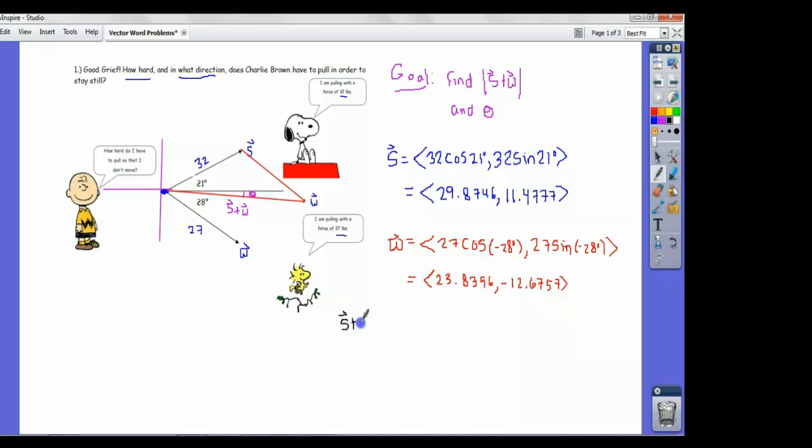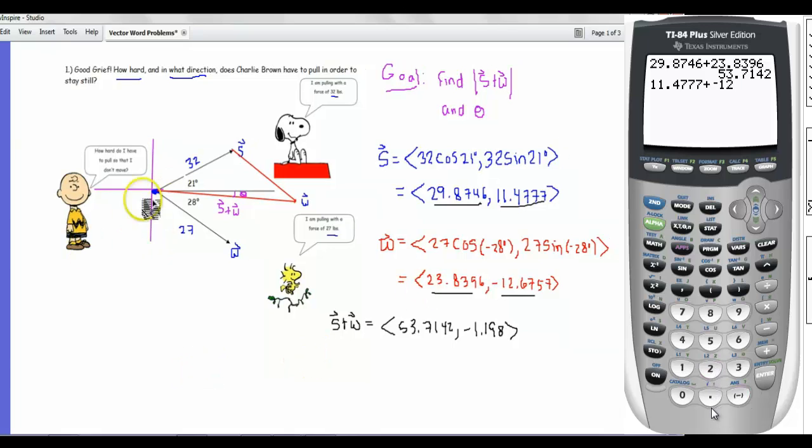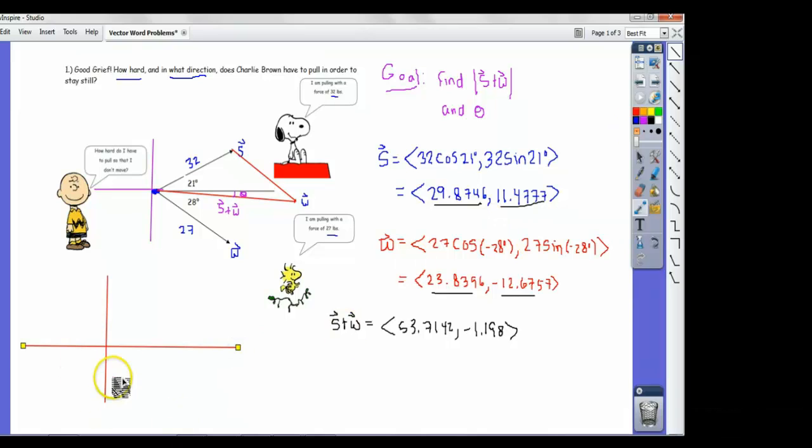Now we're getting there. If we add the two vectors together, that just amounts to adding the x components and you get 53.7142, and when you add the y components you get negative 1.198. I'm going to now make another diagram here where you just focus on the key things of the moment. This is S plus W.